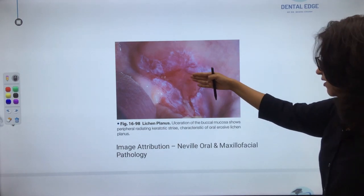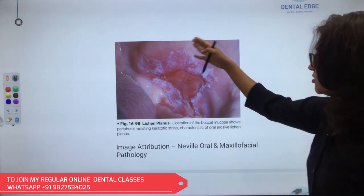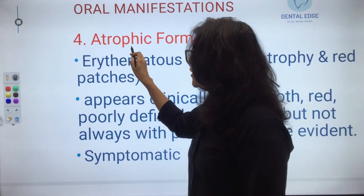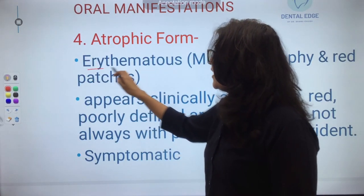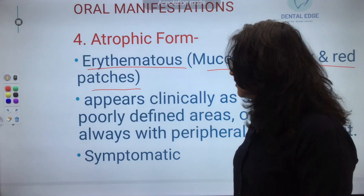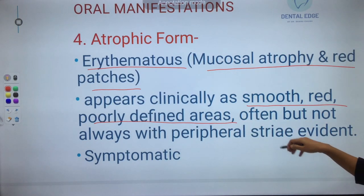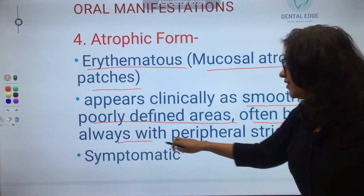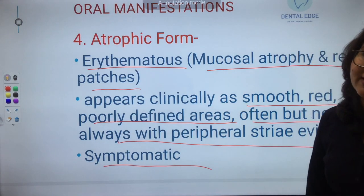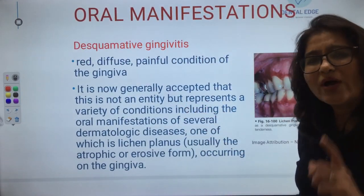The atrophic form appears clinically as smooth, red, poorly defined erythematous areas with mucosal atrophy. Wickham's striae may or may not be present at the periphery. This form is also symptomatic, with patients experiencing pain.